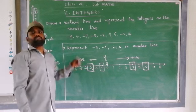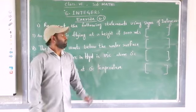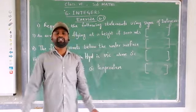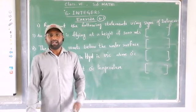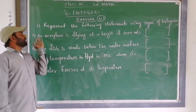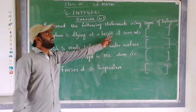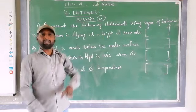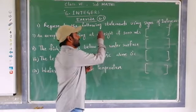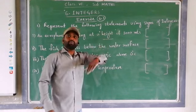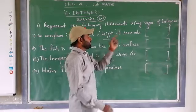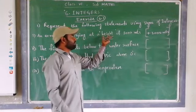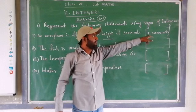Now exercise 6.1. The first question: Represent the following statements using the signs of integers. First: an aeroplane is flying at a height of 3000 meters. The keyword here is 'height' — height means above the surface. Above means positive. So the answer is plus 3000 meters.